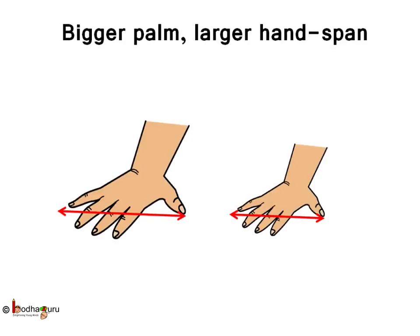Many people measure things with their hand like this — the distance between the tip of the thumb and small finger is one hand span. But shorter people have a shorter hand span and taller people have a larger hand span.